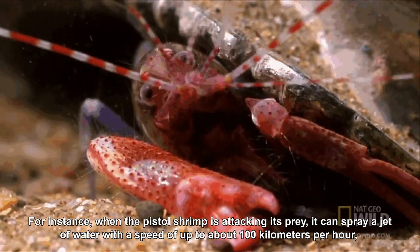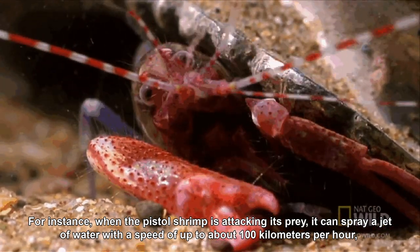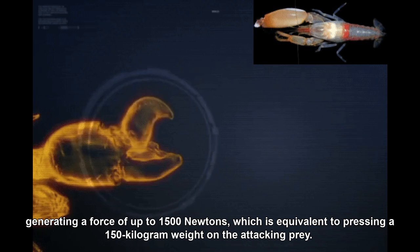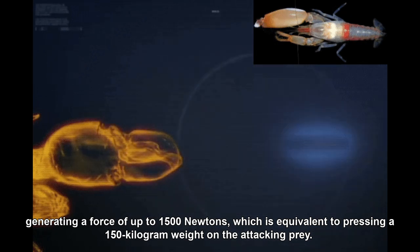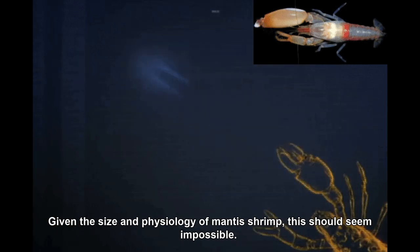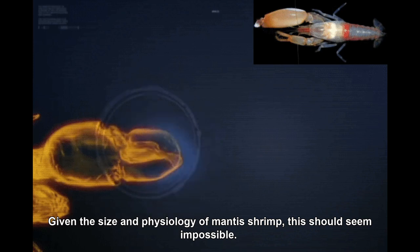It can spray a jet of water with a speed of up to about 100 km per hour, generating a force of up to 1,500 newtons, which is equivalent to pressing a 150 kg weight on the attacking prey. Given the size and physiology of mantis shrimp, this should seem impossible.